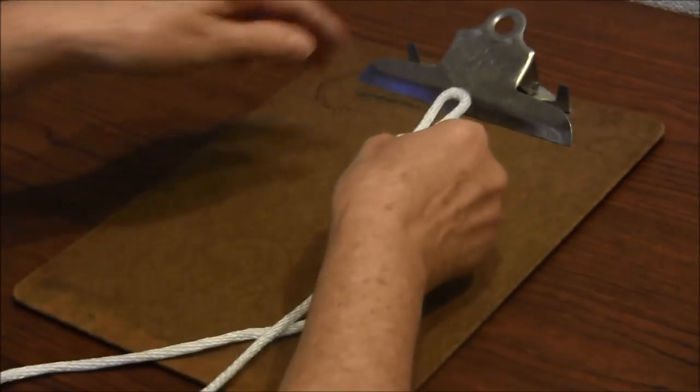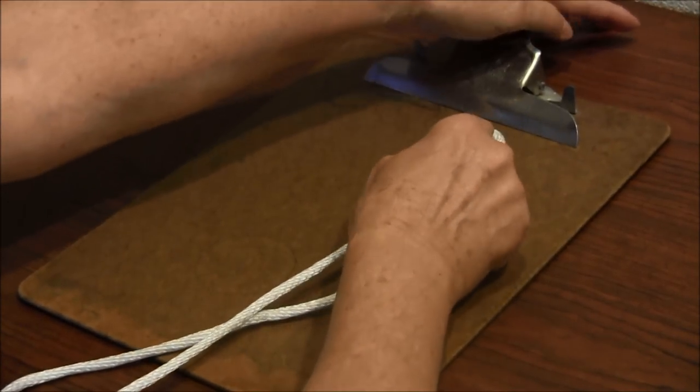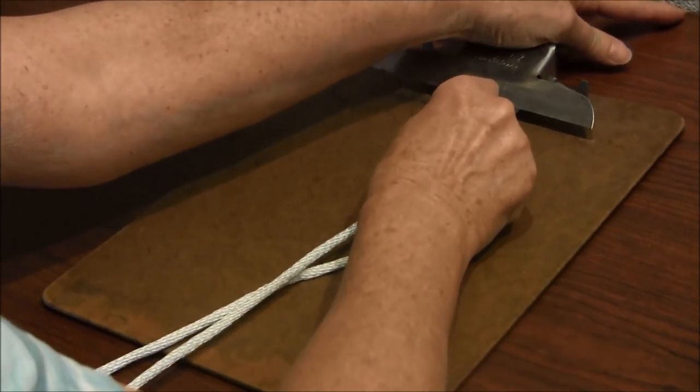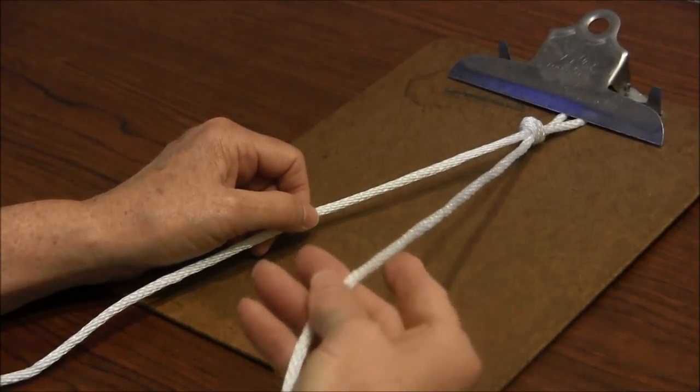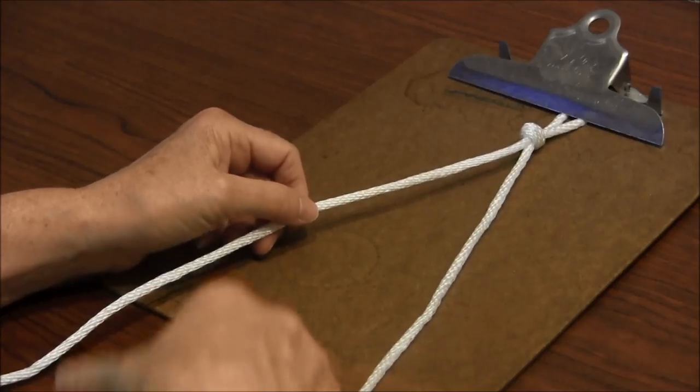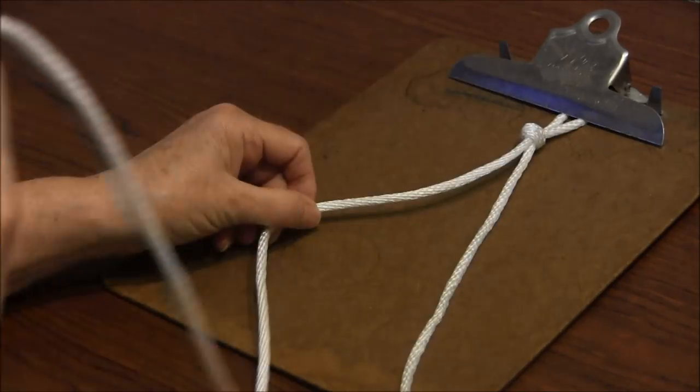Now hook your loop onto something or tape it down. You have two cords. The shorter one is the holding cord, and the longer one is the working cord.